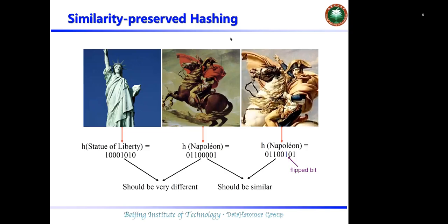The main idea of image hashing is to map images into semantic similarity-preserved hash codes. For example, as shown in these pictures, the first image and the second image are semantically dissimilar, so their corresponding hash codes are dissimilar.